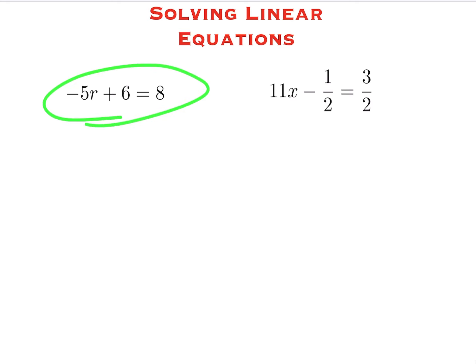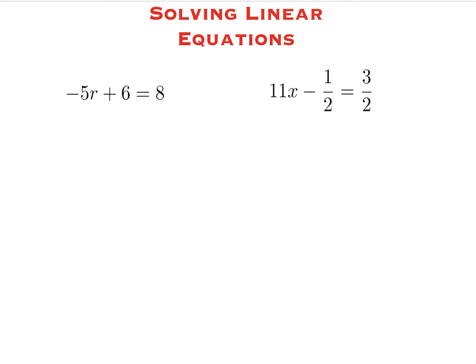Let's take a look at this first one. For this linear equation, we're looking to solve for the variable r — I want to get r by itself. There are two things in the way: the minus 5 and the positive 6. To isolate r, we're going to first get rid of the positive 6. When performing BEDMAS operations in reverse, you take care of addition and subtraction first.